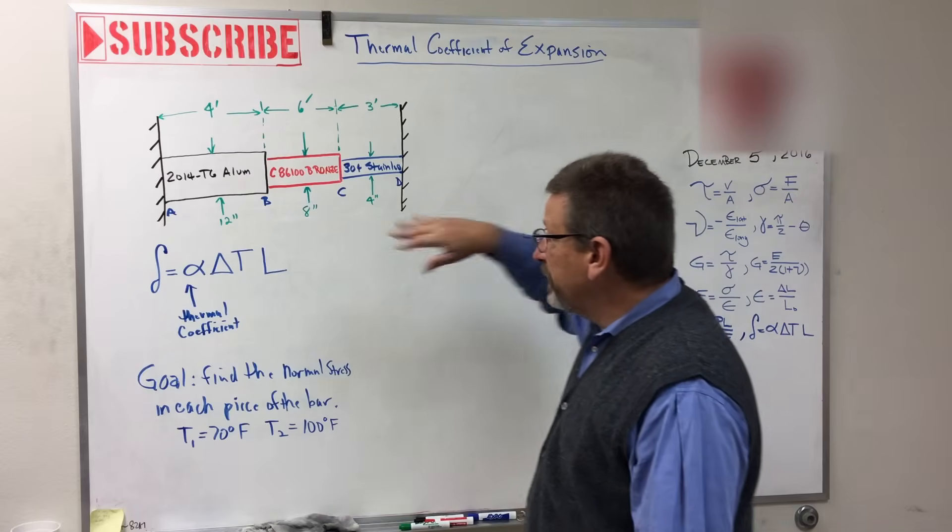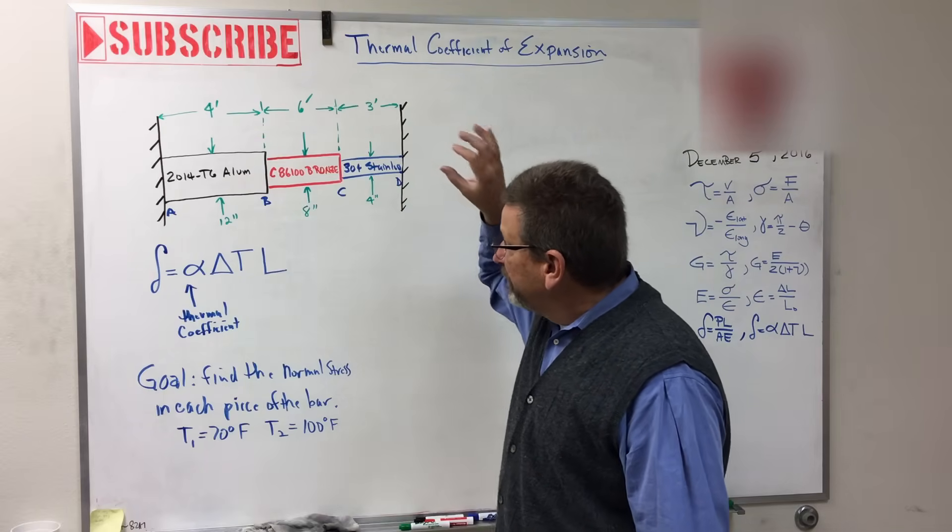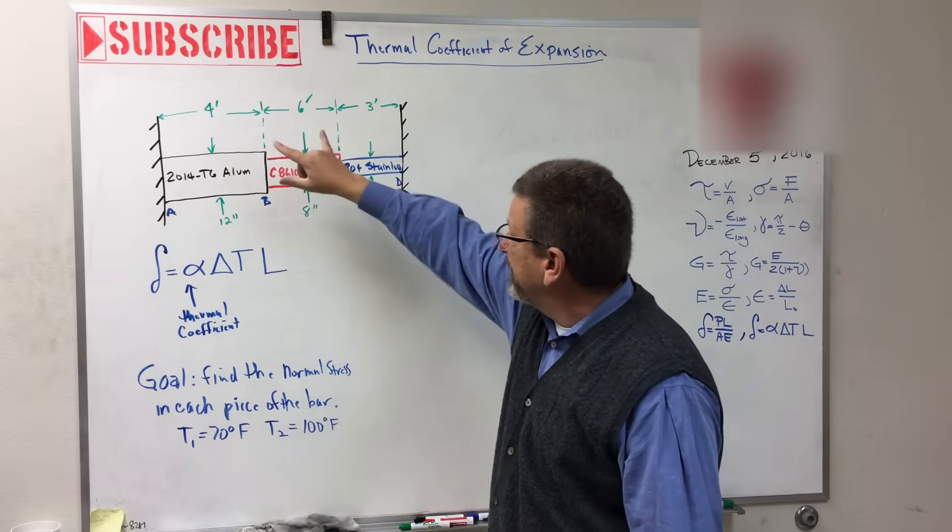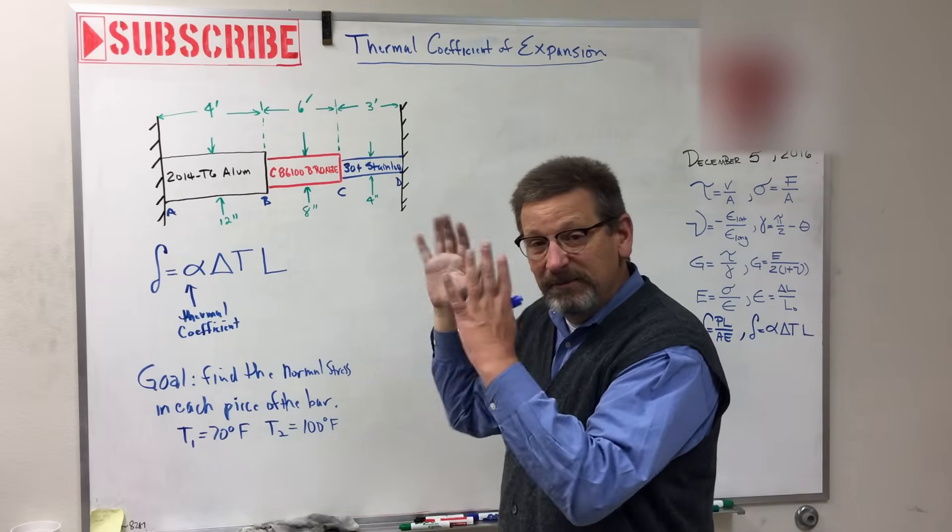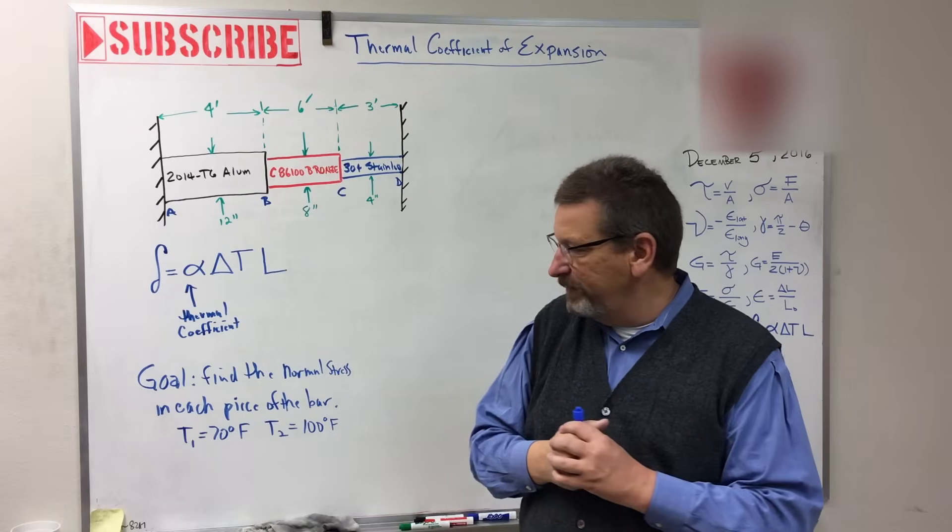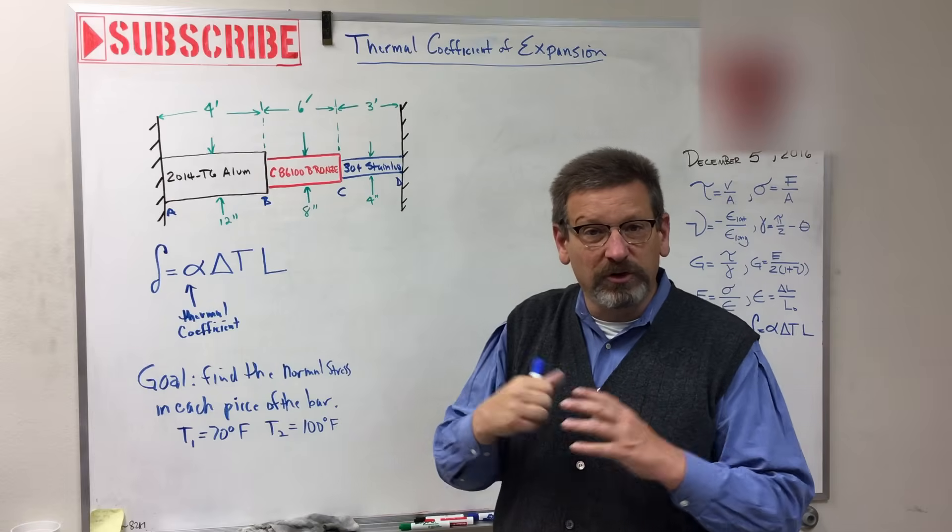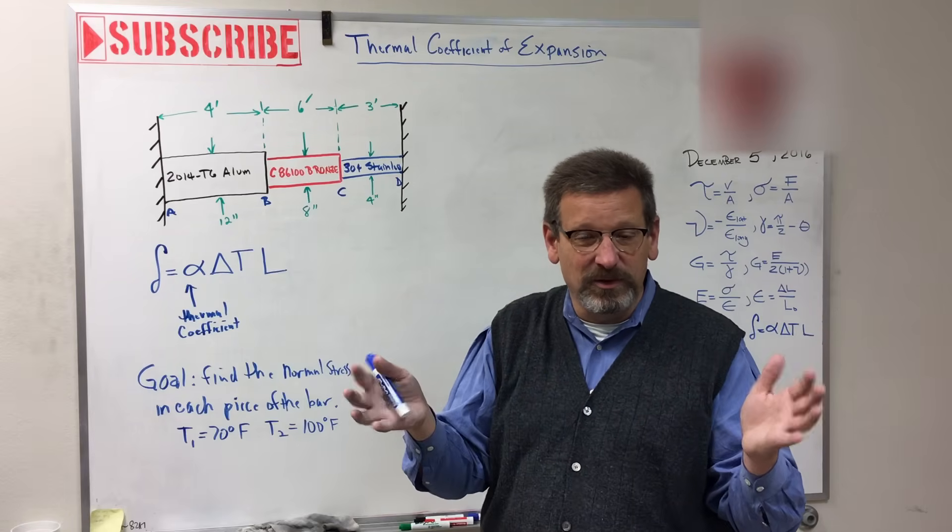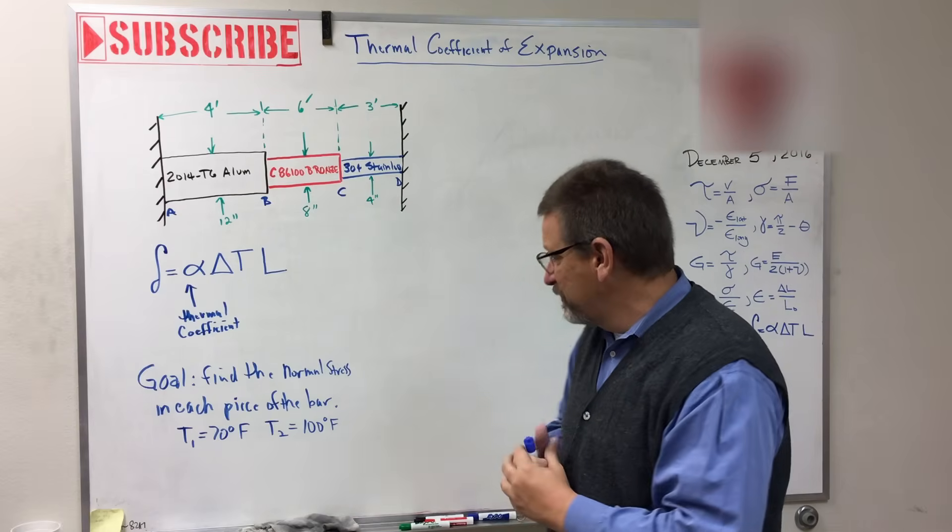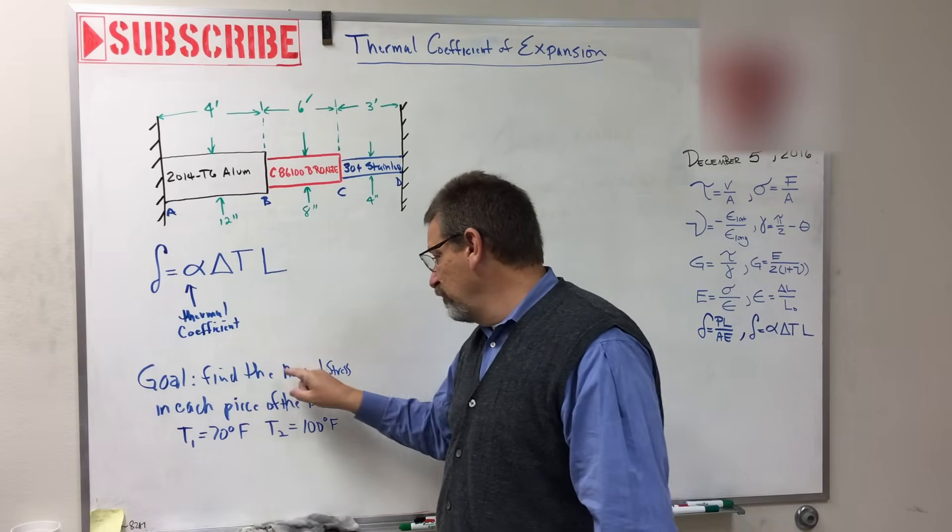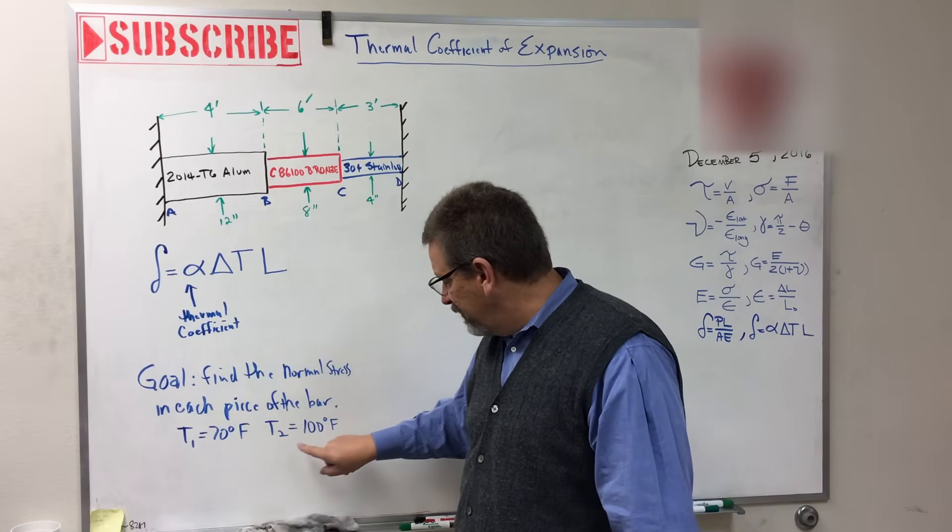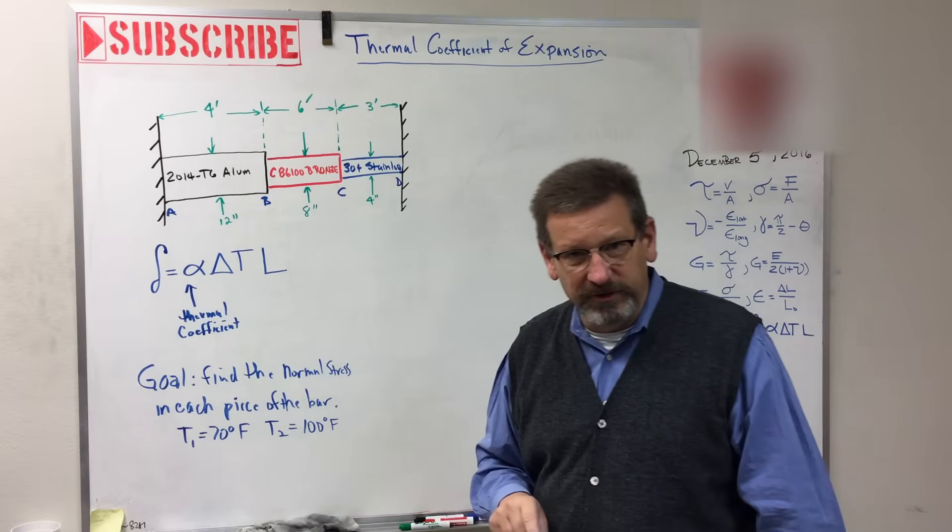So this is a new equation. Look here. I've added it to our equation list. There's the one we talked about last time, PL over AE, the play equation. This is the same thing, change in length. This is due to force. That's due to temperature. So for this problem, we have this bar here that's got an aluminum component, a bronze component, and a stainless component.